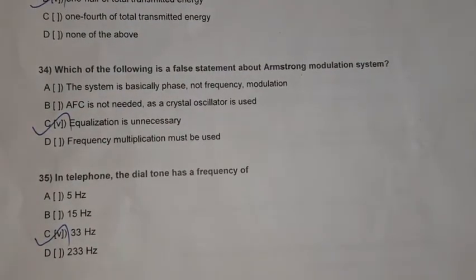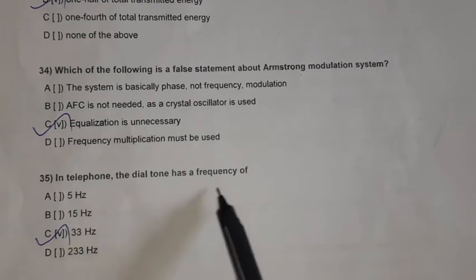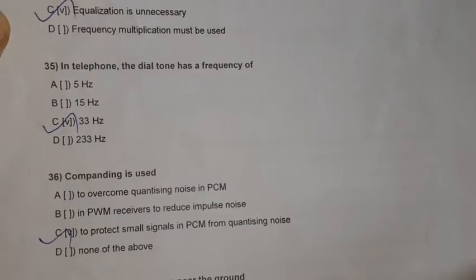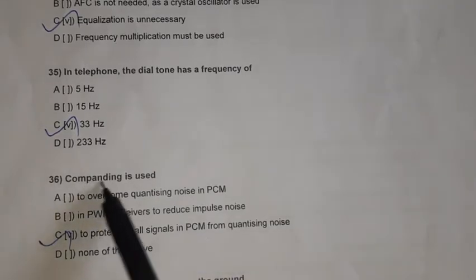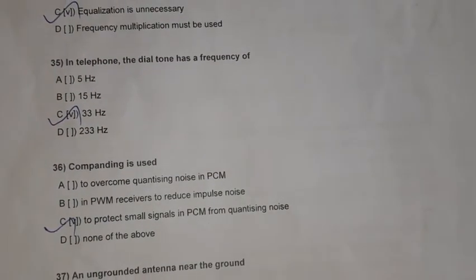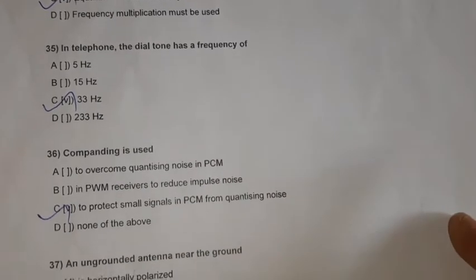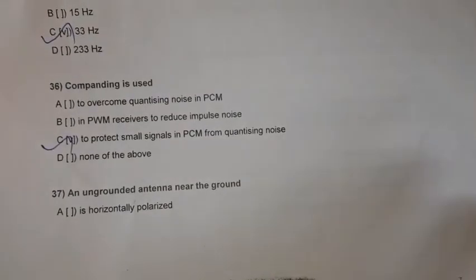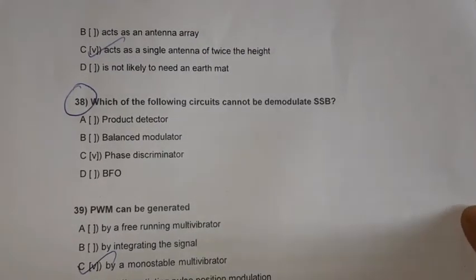Question 35: In a telephone, the dial tone has a frequency of 33 hertz. Question 36: Companding is used to protect small signals in PCM from quantizing noise. Companding is the combination of compression and expanding, primarily used in PCM.